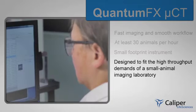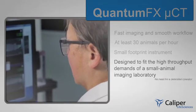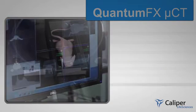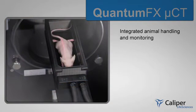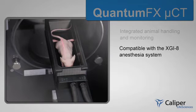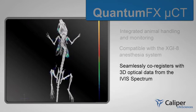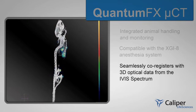Similar to Caliper's IVIS instrument platform, the system is easy for biologists to use without the need for a dedicated operator. It features integrated animal handling and monitoring, is compatible with the XGI-8 anesthesia system, and seamlessly co-registers with 3D optical data from the IVIS spectrum.